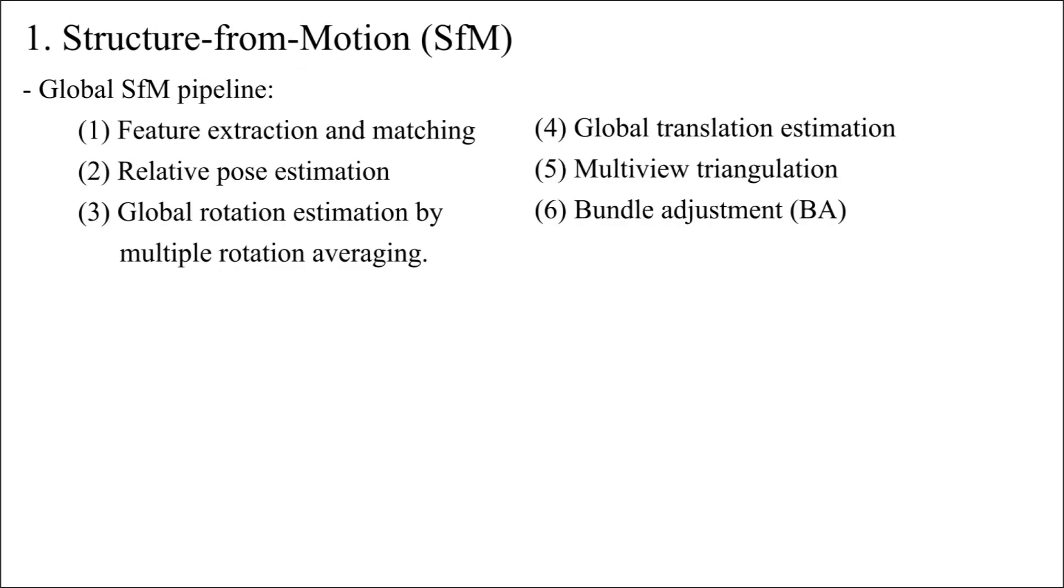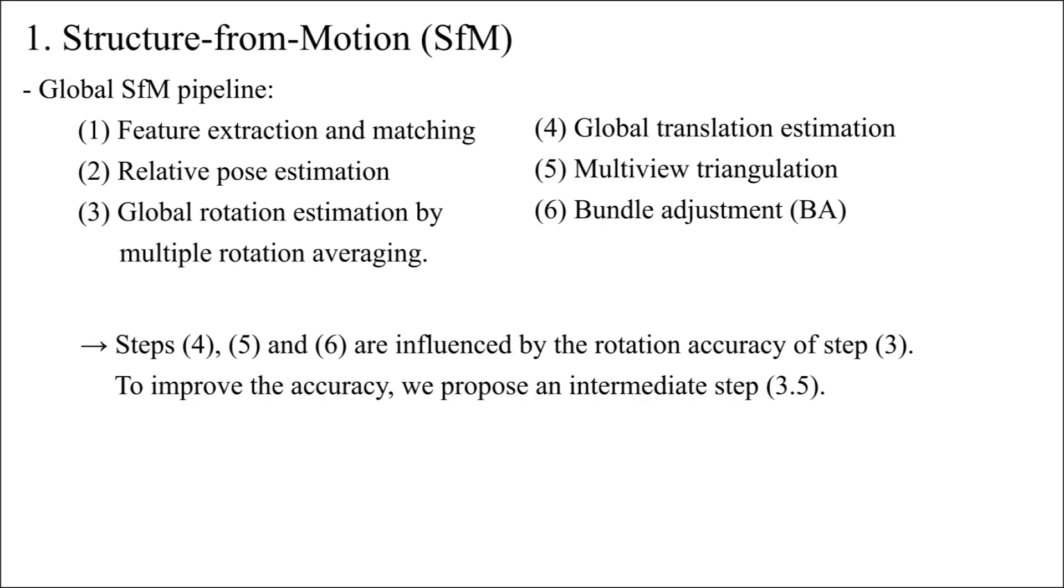So the standard pipeline consists of these six main steps. Here, steps 4, 5, and 6 are influenced by the rotation accuracy of step 3. To improve the accuracy, we propose an intermediate step 3.5. This is what we call rotation-only bundle adjustment, ROBA. This approach has the following advantages.